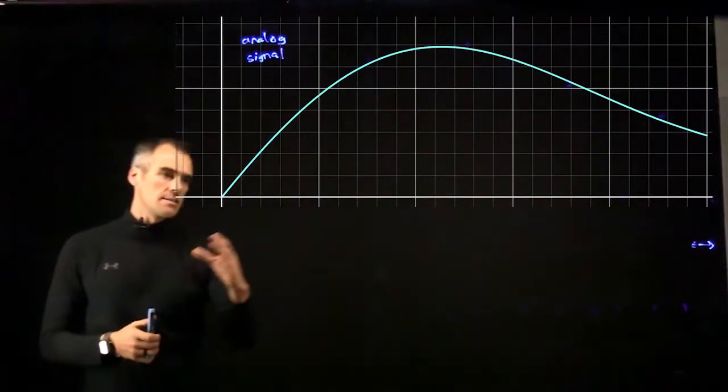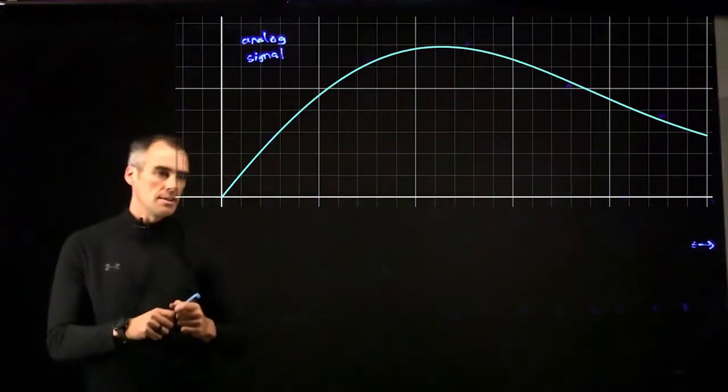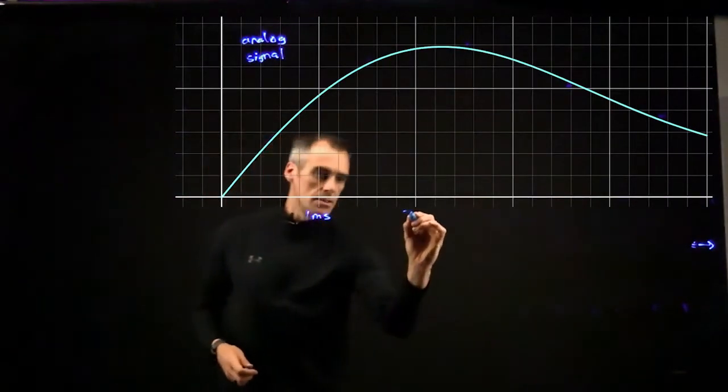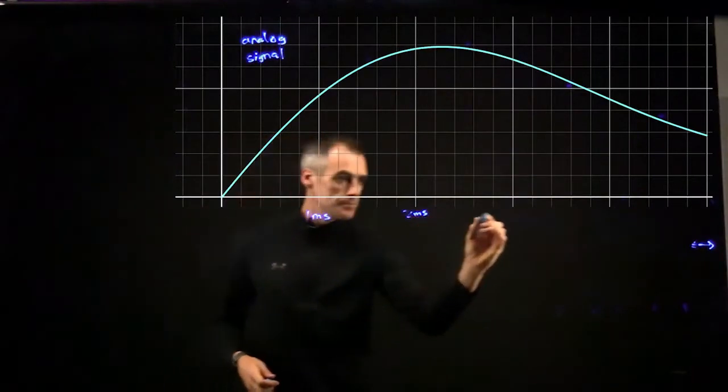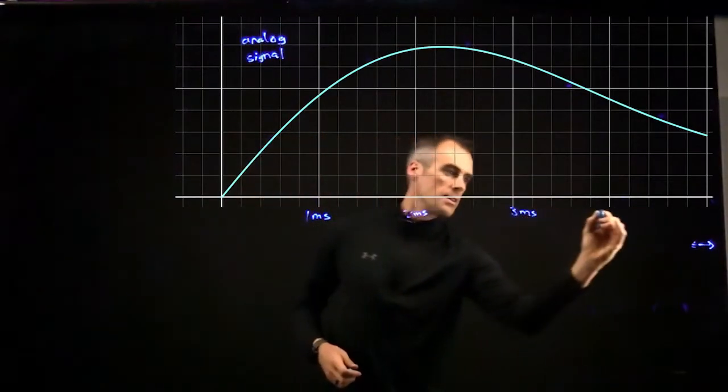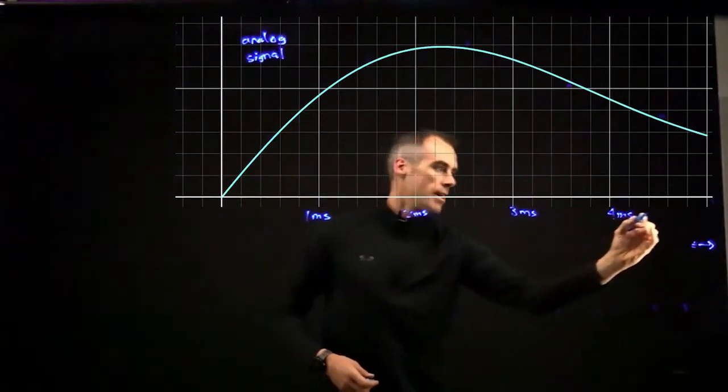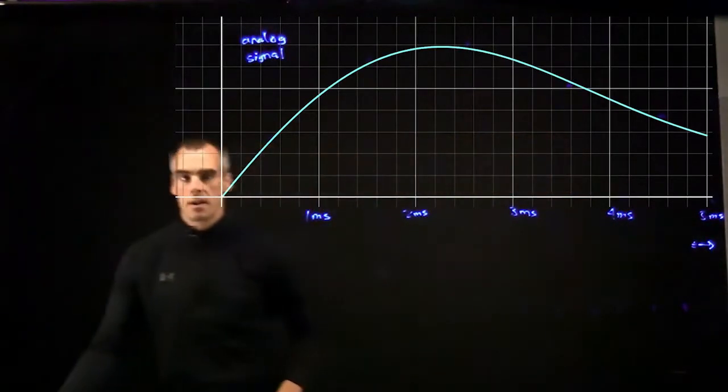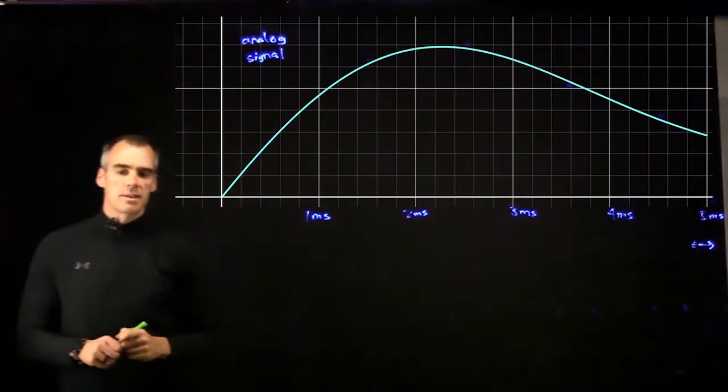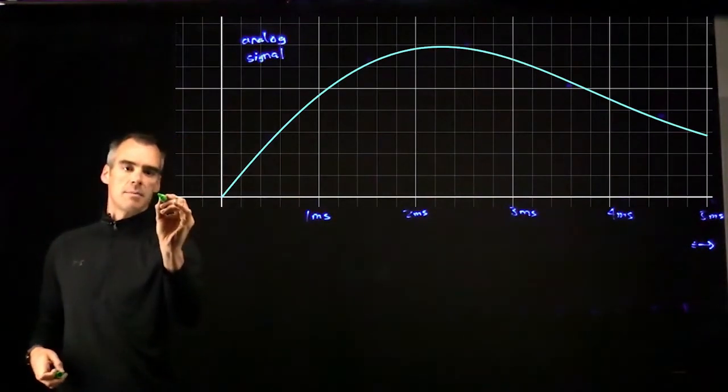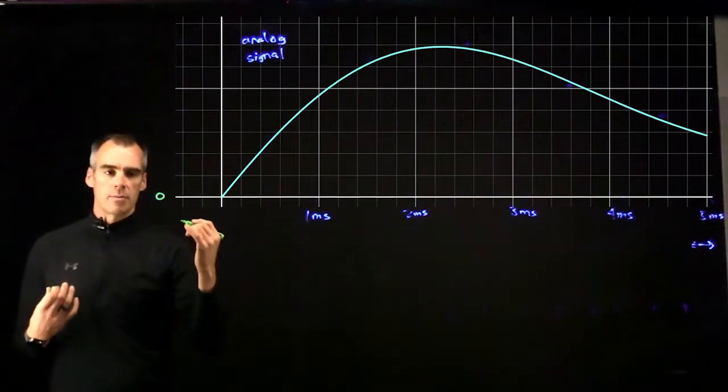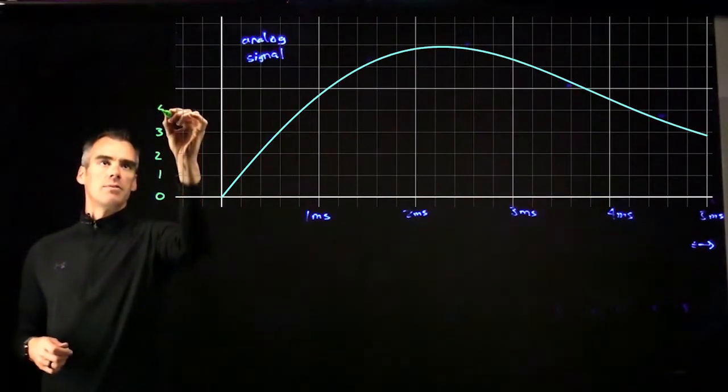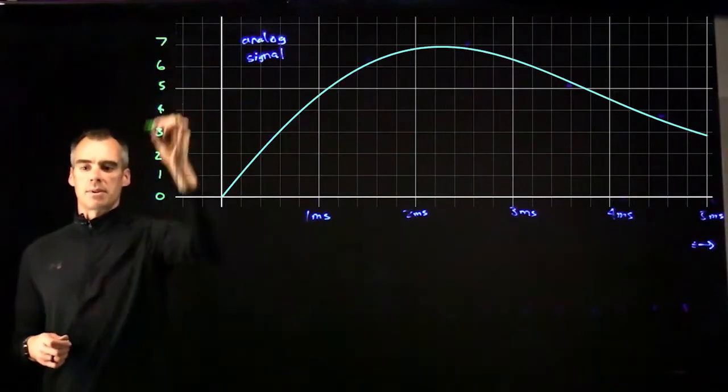And let's go ahead and assign these some values. So this is a time here, so we're going to call that one millisecond, two milliseconds, three milliseconds, four milliseconds, and five milliseconds. And over on this side we'll call, these are going to be different levels, so we'll say this is zero, just all sort of relative values here. We'll say that's zero, one, two, three, four, five, six, and seven up here.